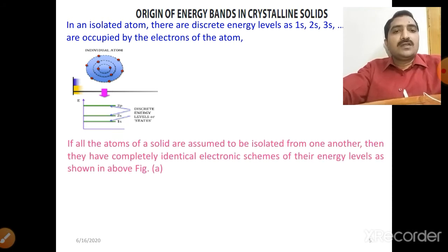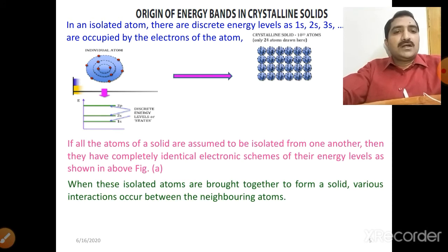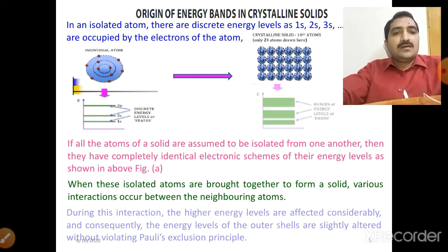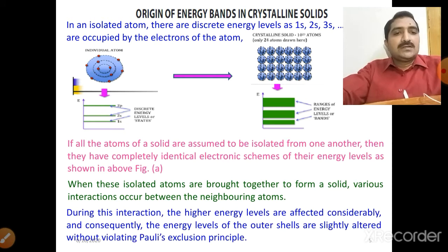If all the atoms of a solid are assumed to be isolated from one another, they have completely identical electronic schemes of their energy levels. When these isolated atoms are brought together to form a solid, various interactions occur between the neighboring atoms. During this interaction, the higher energy levels are affected considerably, and the energy levels of the outer shells are slightly altered without violating Pauli's exclusion principle.